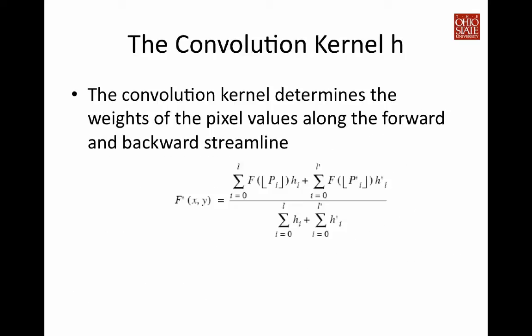Now let's look at the convolution kernel. That is the weight you assign to the forward and backward noise pixel values along the streamlines. There are multiple ways that you can do it. One is to simply use a box filter. You assign an even weight to every pixel along the streamline. So here, assuming the forward streamline has a length of L, then the weight is going to be 1 over L. And same thing for the backward streamline.